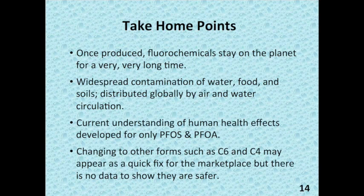On slide 14, I have some take-home points. Once produced, persistent forms of fluorochemicals stay on the planet for a very long time, and the widespread contamination we see today in food, water, and soil is due to human use of these materials and the global distribution of fluorochemical residues by processes that may include air and water circulation. Our current understanding of the toxicology of these fluorochemicals is developed primarily from our knowledge of PFOS and PFOA. In comparison, we know relatively less about other proposed alternatives, in part because their structures may not be known and they've received little attention to date.